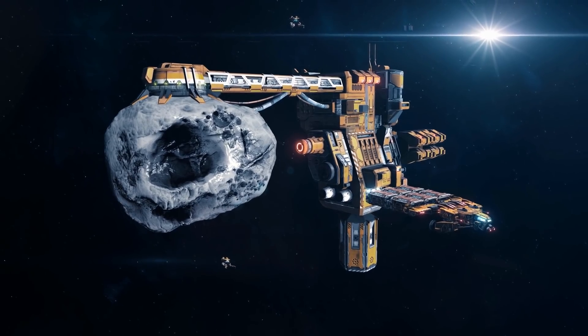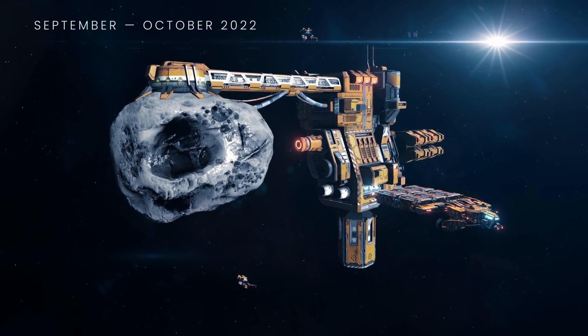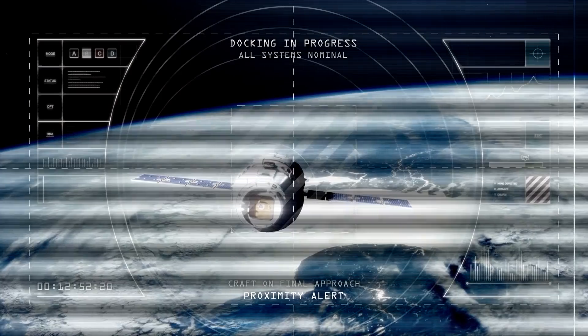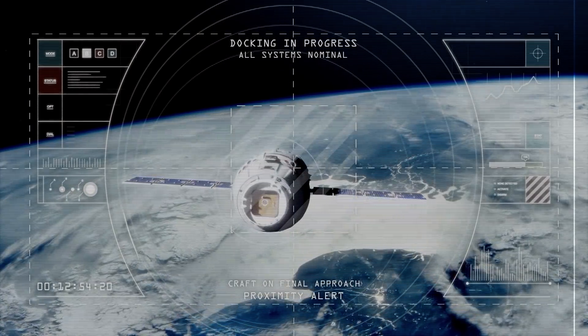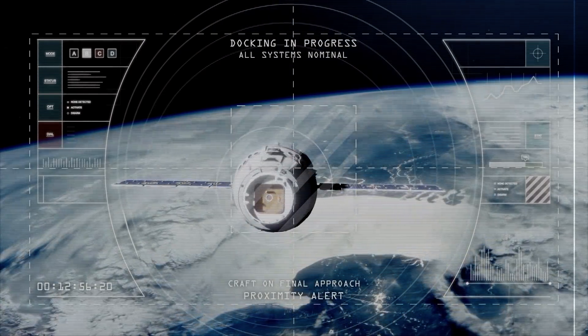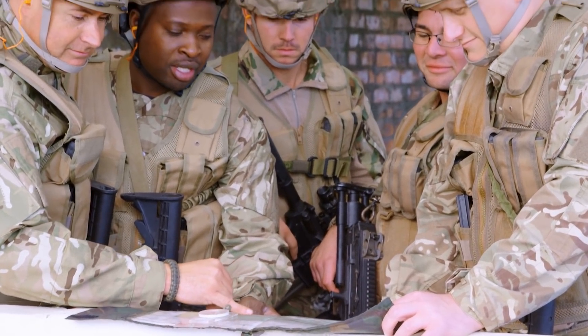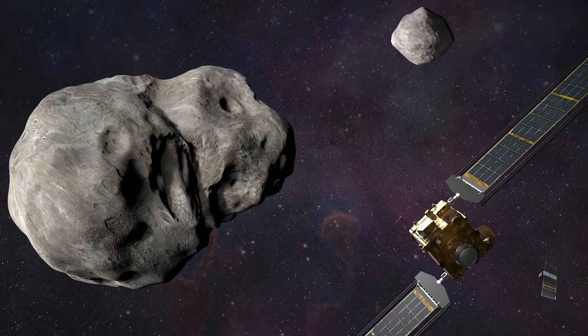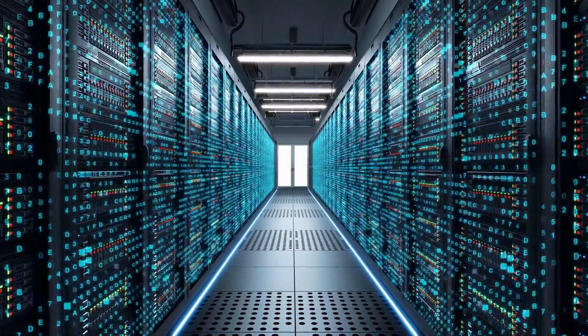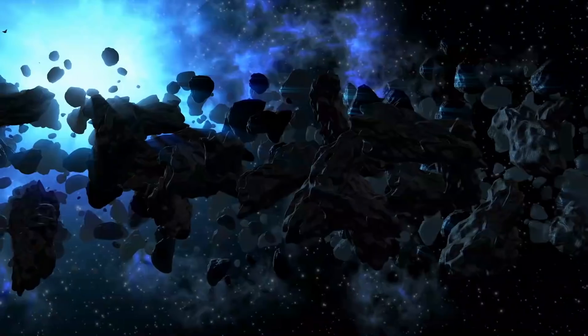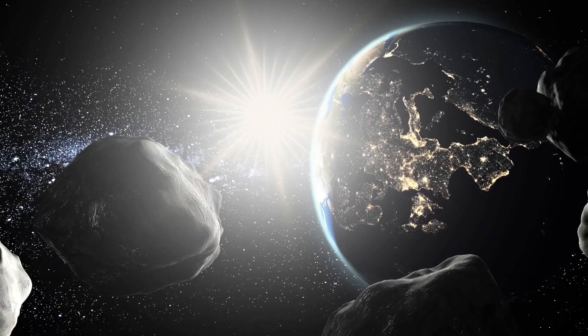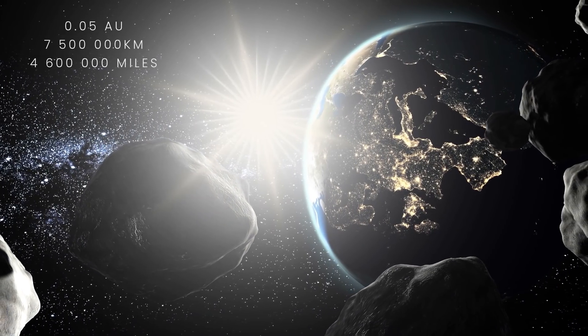However, the collision should happen between September and October 2022. This is going to be the very first test using the kinetic impactor technique to alter an asteroid's trajectory and speed, and will be a kind of military training in terms of space. Now, Didymoon doesn't threaten Earth yet, but NASA's database contains more than 2,000 potentially hazardous asteroids that can get as close to us as 0.05 astronomical units.